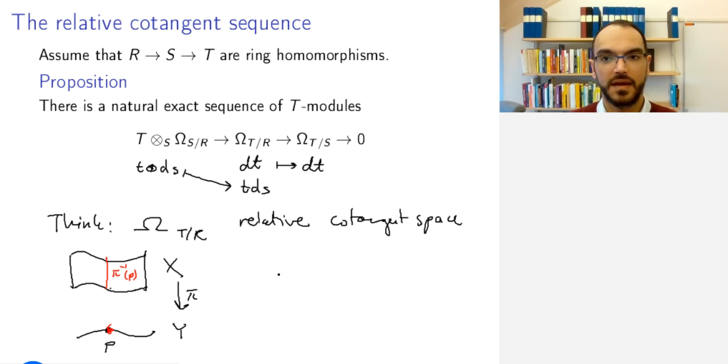Then, I have three objects. I have the tangent space of X at P, or at some point here P prime. And this maps down, so that is a plane in this drawing that maps down to the tangent space of Y at P.